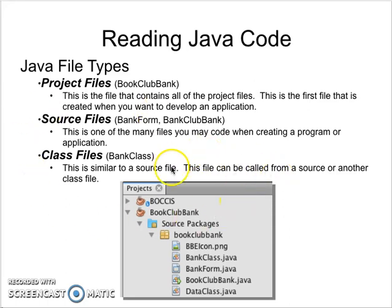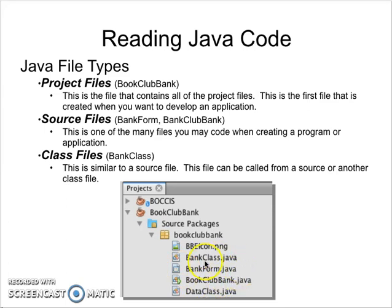In the case of this program here, this is called the Book Club Bank. Basically, this is a book club that has petty cash and they want to track it using a database application. Here you have the bank form, which contains all the routes, the account number, the debits, the credits, and all that interesting stuff that makes up this Book Club Bank.